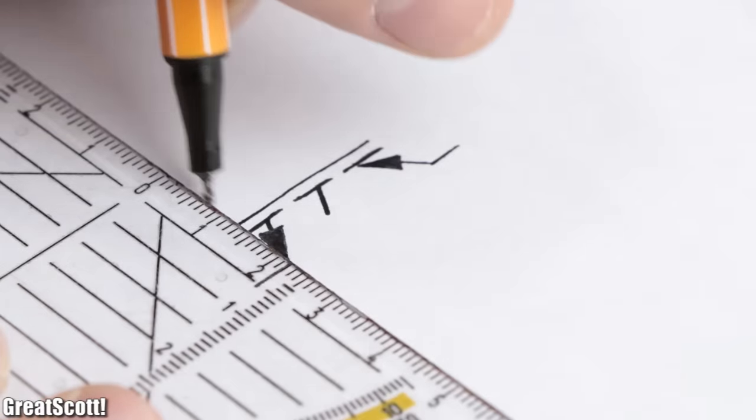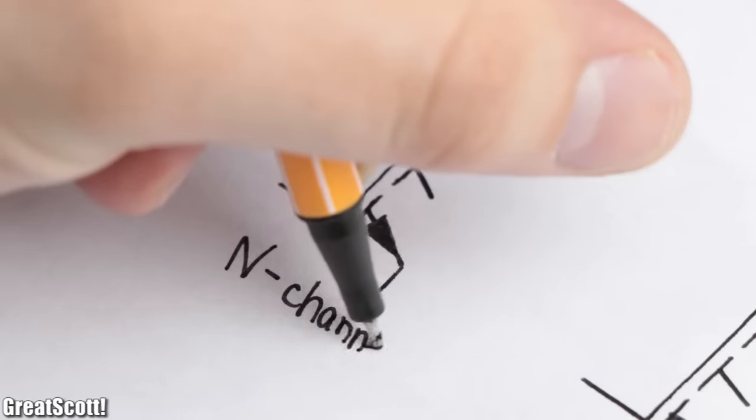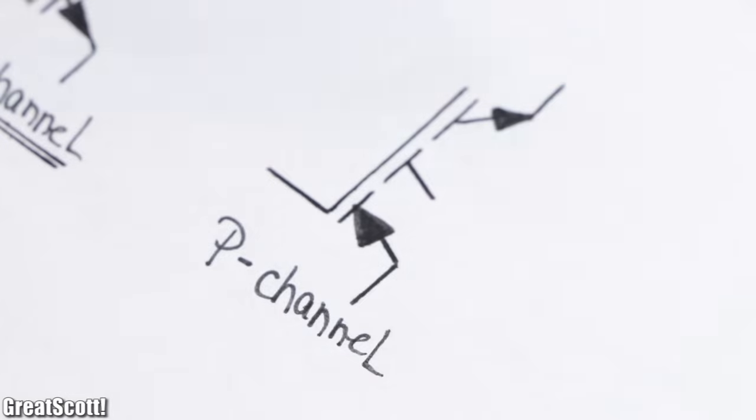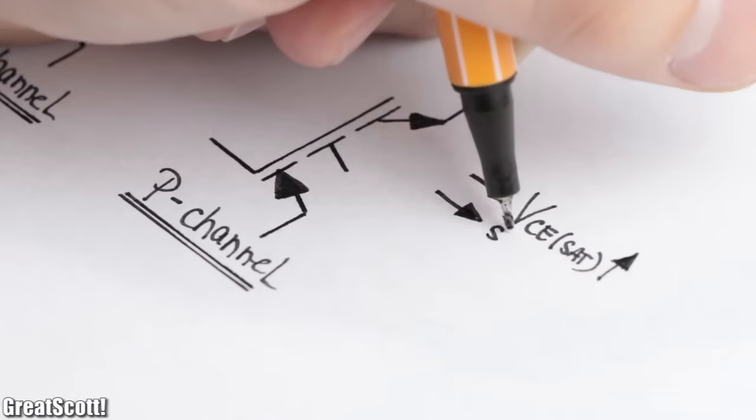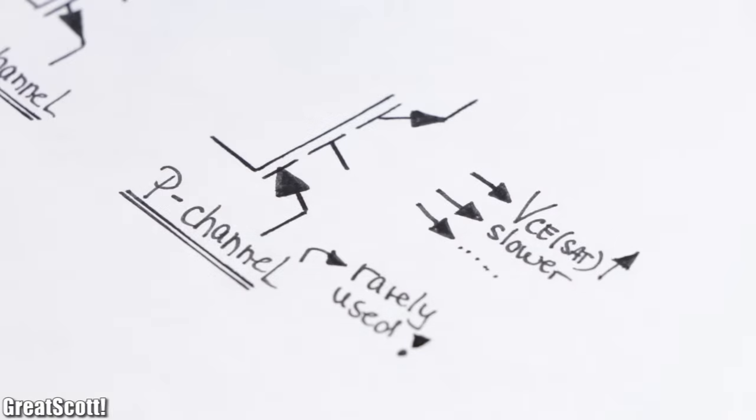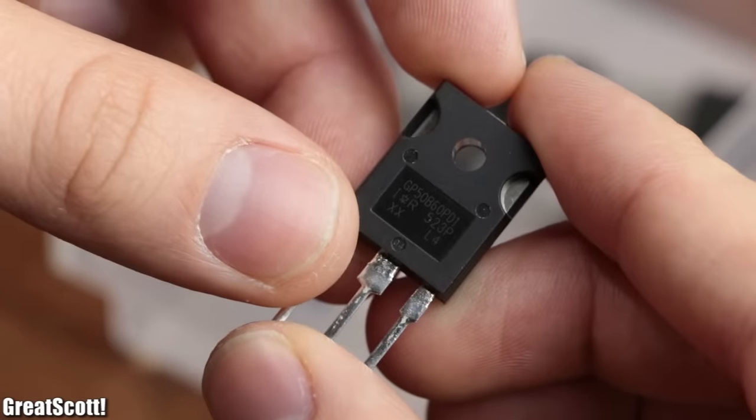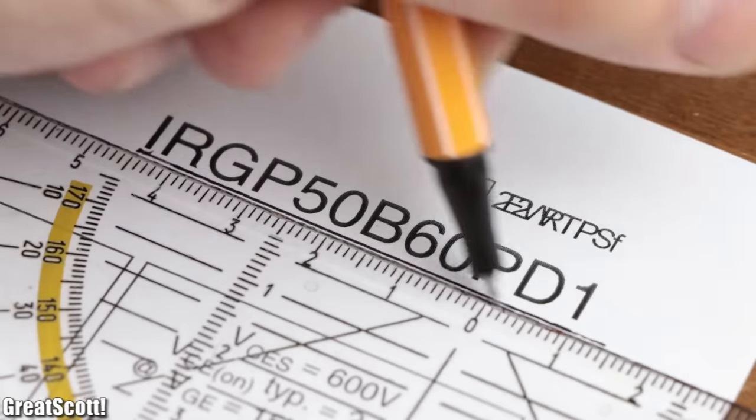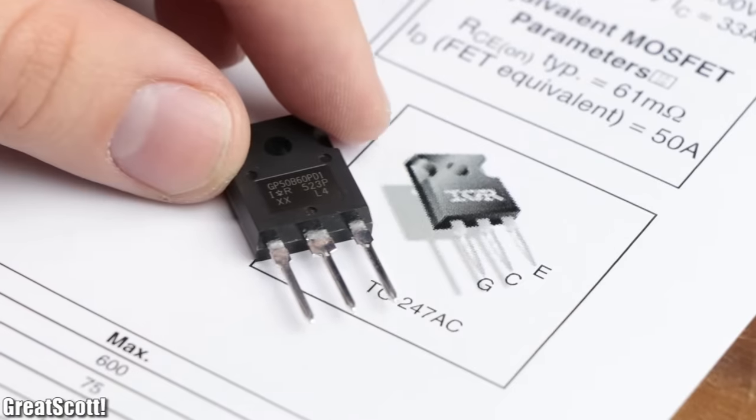First off, the basics. Just like with MOSFETs, there exist an n-channel type and a p-channel type IGBT. But since p-channel ones usually feature inferior characteristics, they are rarely used. As a practical example, I will utilize the RRGP50B60PD1 n-channel IGBT, whose pinouts can be found in the datasheet.